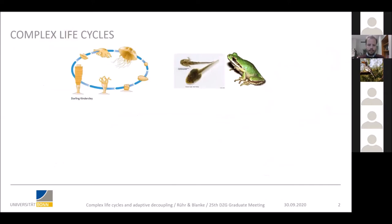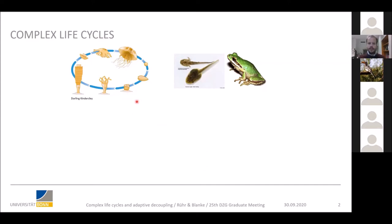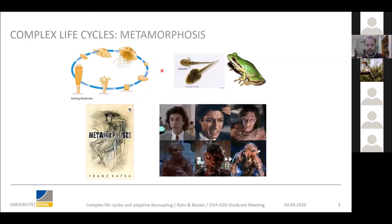First I would like to introduce what exactly are complex life cycles. We have two examples of animals with complex life cycles here: on the left, a jellyfish with the sedentary polyp state and the free-swimming medusa state, and on the right, a frog with its aquatic tadpole. Animals with complex life cycles always show at least two distinct life phases, separated by metamorphosis. This is actually found in eight out of ten animals — 80% of all animals — and metamorphosis usually comes with strong morphological changes and changes in behavior and physiology.